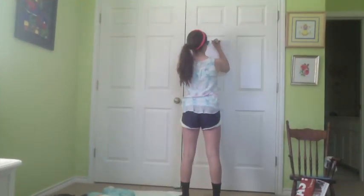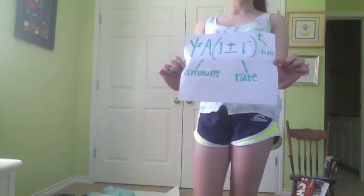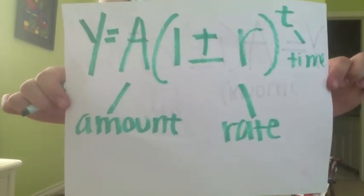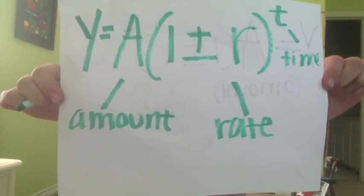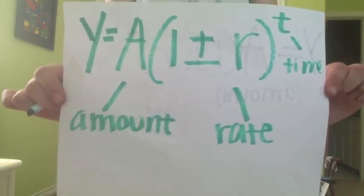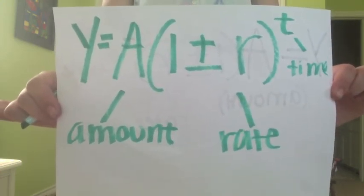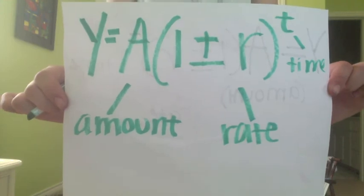Now that we know what exponential growth and decay are, we need to know the formula. y equals a, or amount, times 1 plus or minus, depending on if the situation is exponential growth or decay, r, or the rate, times the exponent t, or time.